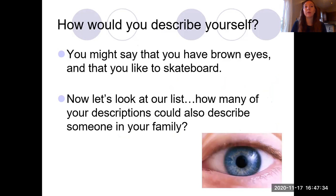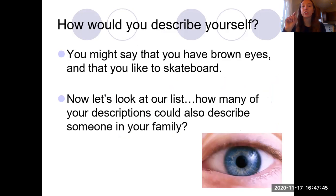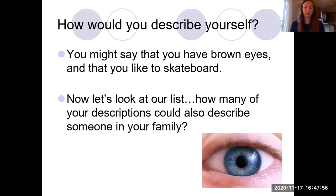So how would you describe yourself? You might say that you have brown eyes, that you like to skateboard. Look at your list. Think about it — how many of your descriptions could also describe someone else in your family? In my list, brown hair describes my mom, my dad, and my sister, and that's not even factoring in my aunts, uncles, or grandparents.